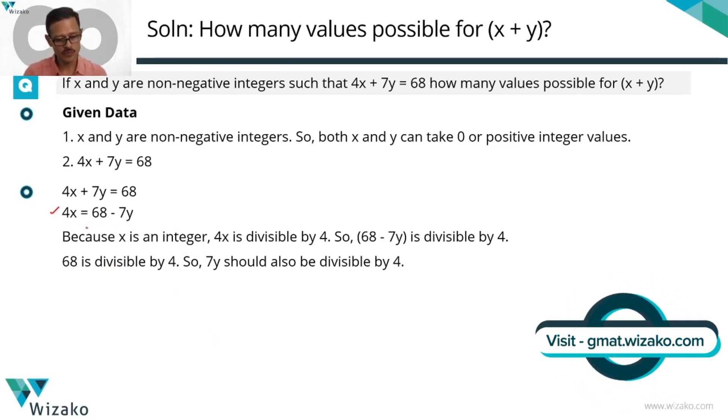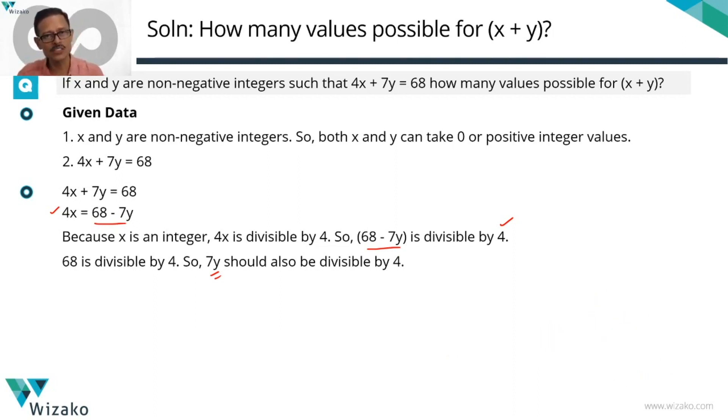Because x is an integer, 4x is divisible by 4, which means 68 minus 7y is also divisible by 4. 68 is divisible by 4. If 68 minus 7y is divisible by 4, that's possible only when 7y is divisible by 4. Y is an integer. 7 is not divisible by 4. So if 7y is divisible by 4, that's possible only when y is divisible by 4.